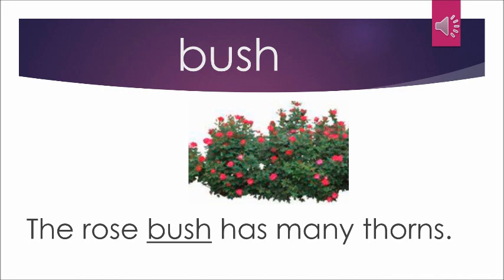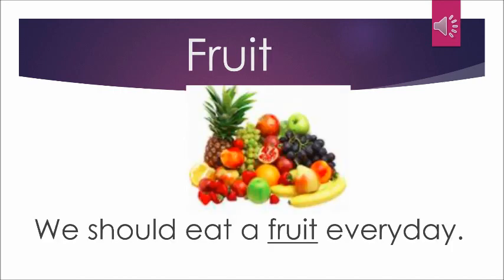Bush is a plant which has many many stems and it is small. So the sentence is: A rose bush has many thorns. Can you see the picture where the rose plants are together, very close to each other and very dense? That is called a bush.